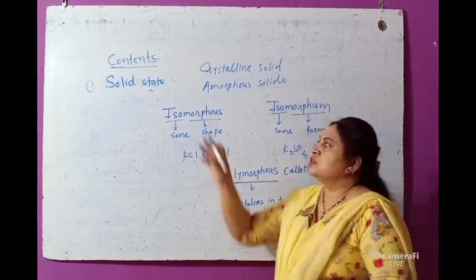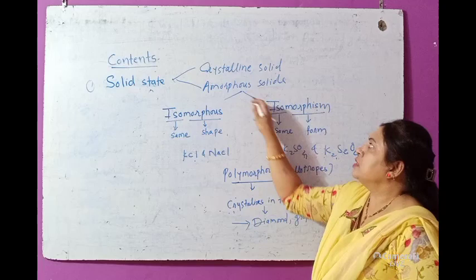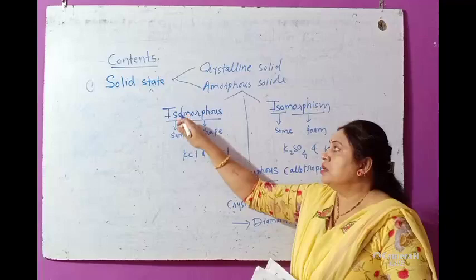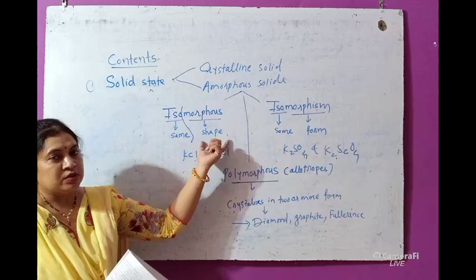We are continuing with the classification of solid state — crystalline solid and amorphous solid. Now we can see the important property of amorphous solid. The first important property is the isomorphous property. 'Iso' means the same and 'morphous' means the shape, so the isomorphous property means the same shape in crystalline solids.